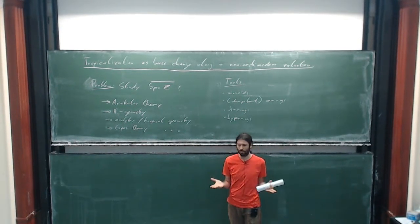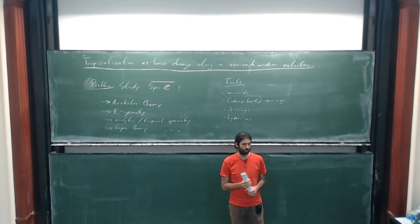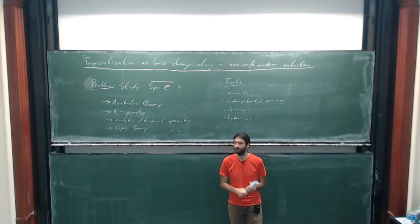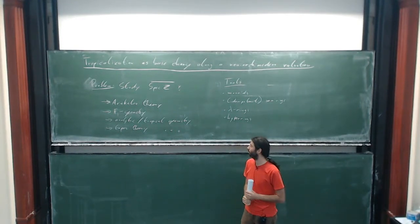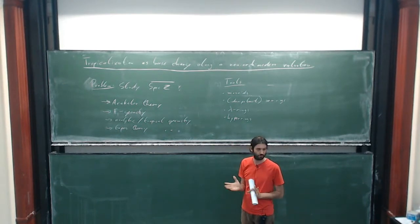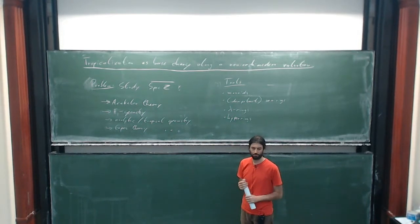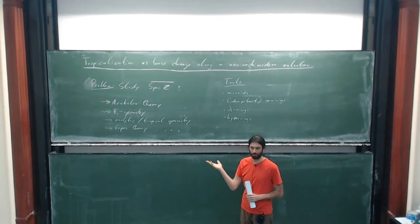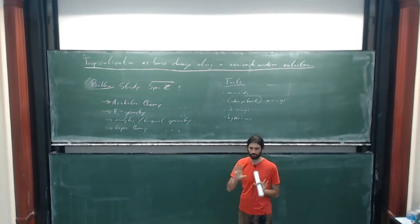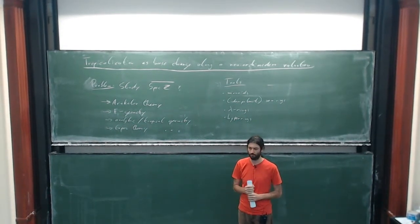Analytic and tropical geometry play an important role. This was very much motivated by Hans and Katja's talks. Behind all this stands the language of topos theory. I think basically everything can be formulated in topos theory — it's functorial enough.